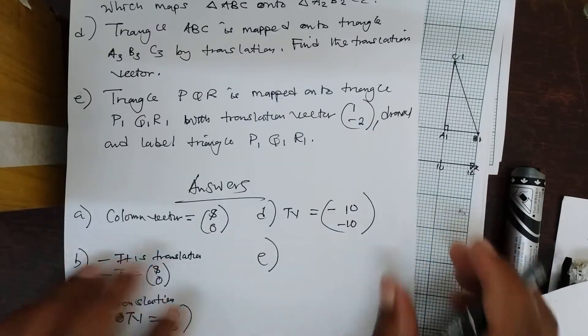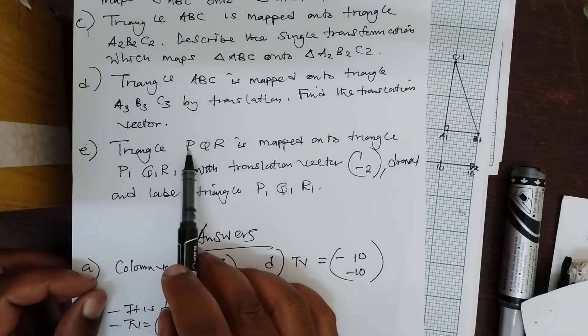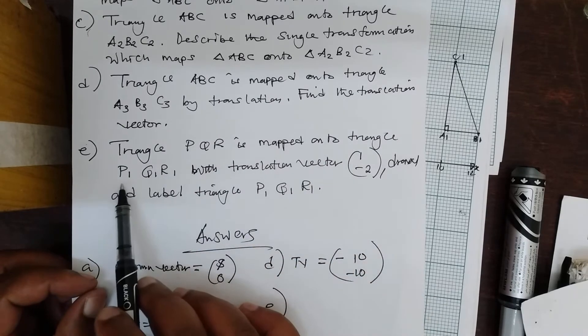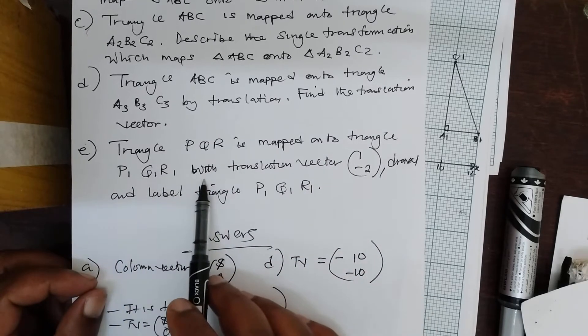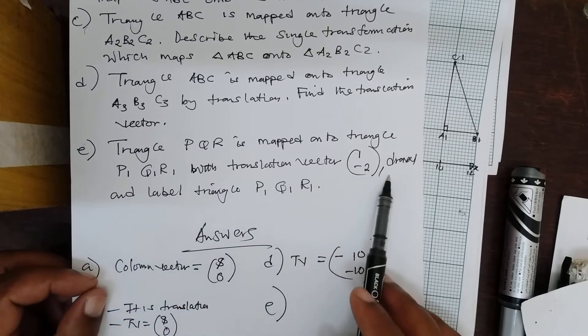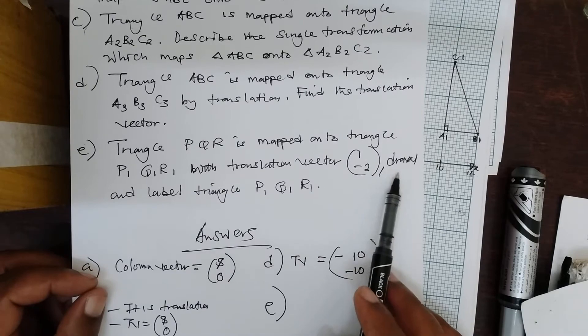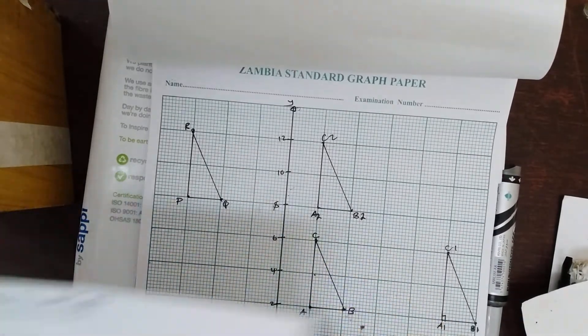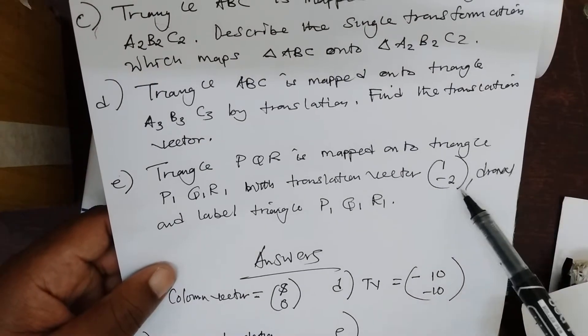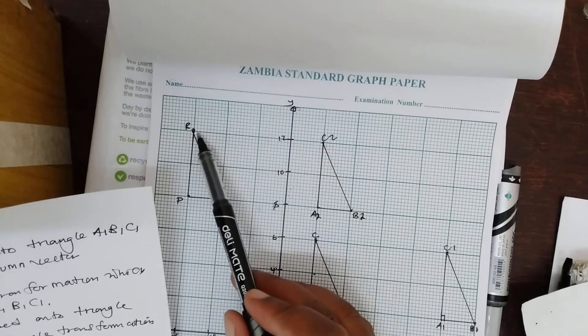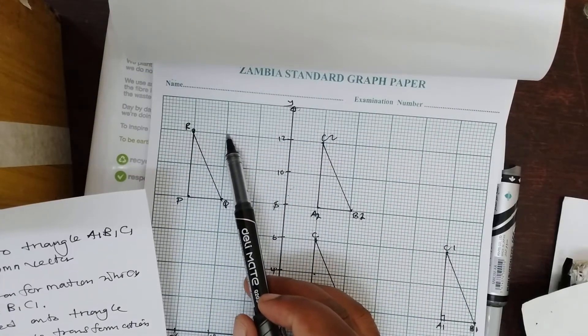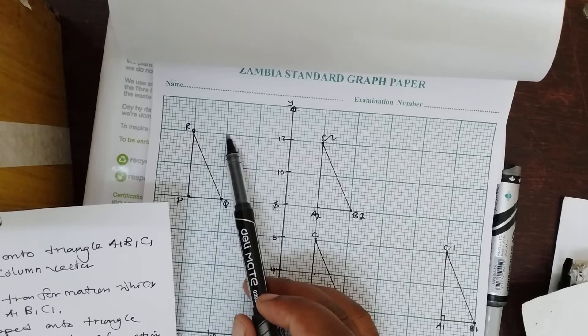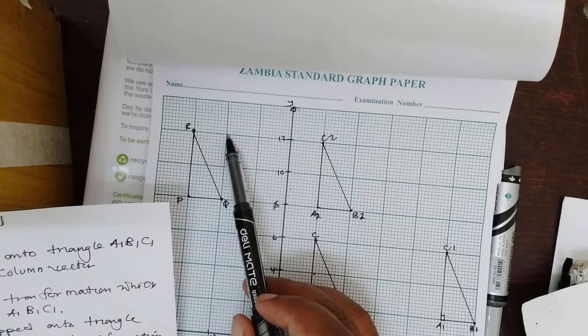Triangle PQR is mapped onto P1, Q1, R1 with the translation vector 1, negative 2. Can we draw and label this triangle? The translation vector 1, negative 2 means that from each point you will be making one step to the right, then two steps downwards.